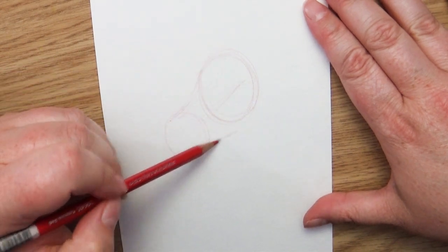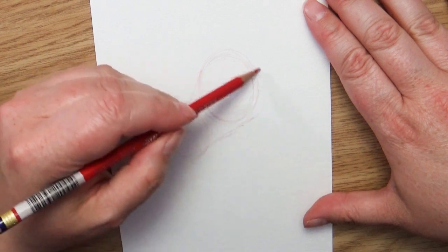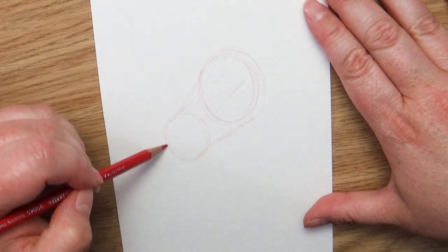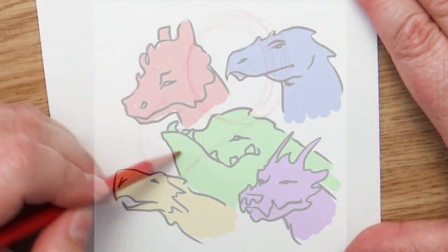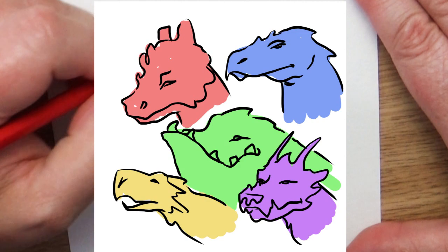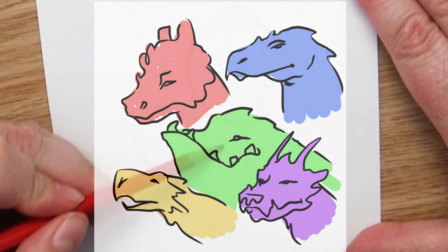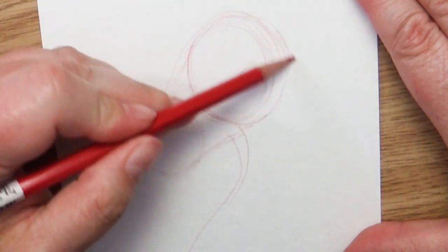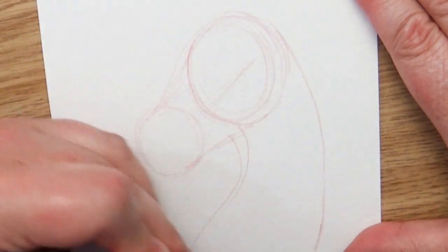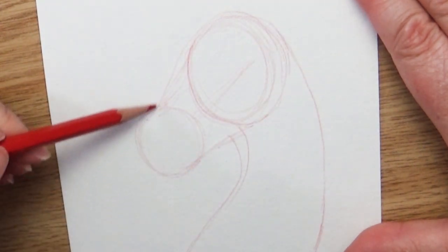So the first thing I'm going to do is build up the actual shape of my dragon head. Now because dragons can come in any shape, size, or variance, this is completely up to interpretation, but I usually pick some sort of real animal base. I'll talk a little bit more about that later in the video, but for this one I'm going to use my horse head shape.